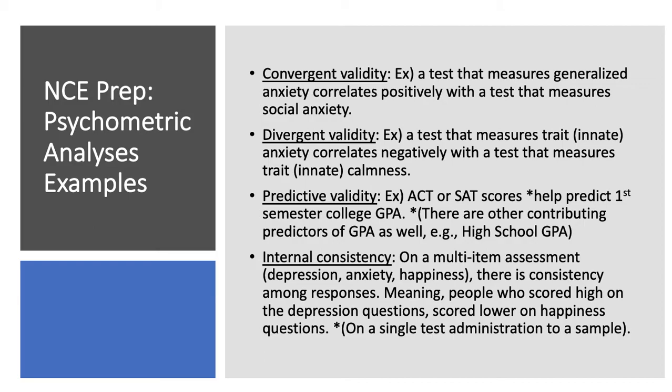Divergent validity is looking to see if we have a negative correlation in the manner that we would expect with tests. For instance, if we were to measure traits — which is innate anxiety — would that correlate negatively with a trait calmness scale? So we give one sample a test measuring anxiety and that same sample one measuring calmness, and we would expect a negative correlation between these two tests.